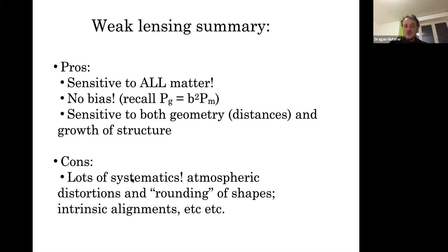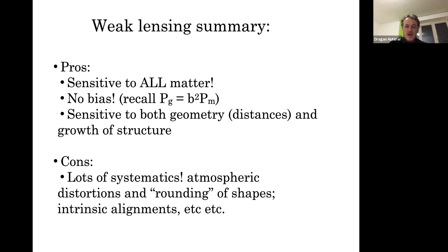That's a huge advantage: weak lensing is sensitive to both geometry and structure. The cons are mainly systematics. Atmospheric distortions will mess you up — if you don't happen to live near the best locations like Chile, Hawaii, or Antarctica, the atmosphere will round the shapes of galaxies and cause many things to go wrong in the measurements. But on the theory side, it's wonderful. The measurements are just generally tough.